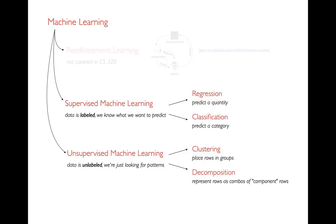Within supervised machine learning, we're going to learn two things this semester. One is regression, where we're trying to predict a quantity. The other is classification, where we try to predict a category. In any case where we're trying to predict something, that's known as a supervised problem — the data has labels, usually a special column telling us a quantity like house price or some category, and we predict that label for cases where it's unknown. In unsupervised learning, there is no special label column; we're just trying to look for general patterns in the data.